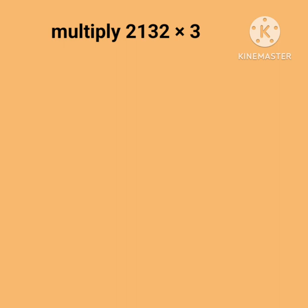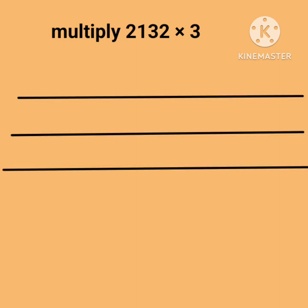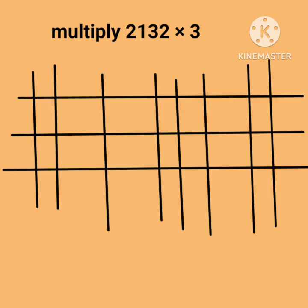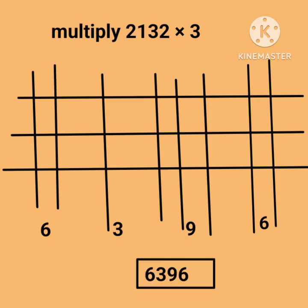Multiply 2132 by 3. Draw 3 horizontal parallel lines. Now draw 2, 1, 3, and 2 vertical parallel lines accordingly. Now we count the points of intersections — that comes out to be 6, 3, 9, 6. Hence the answer is 6396.